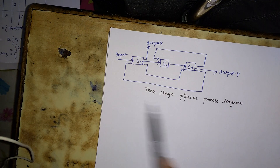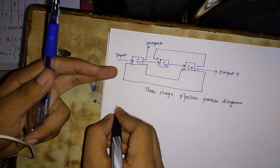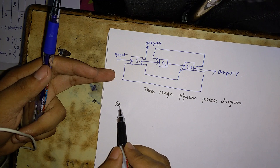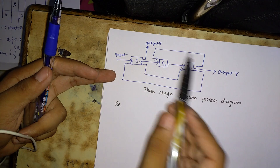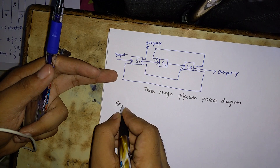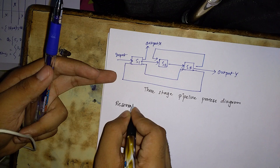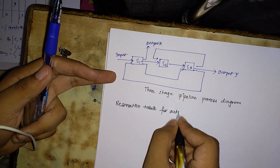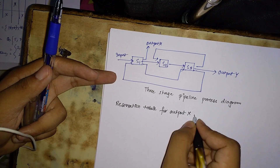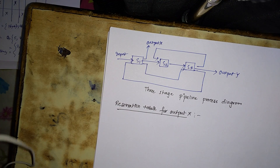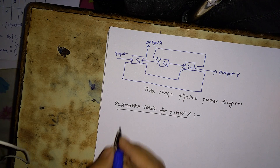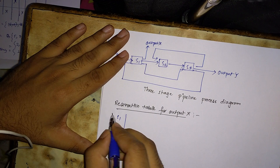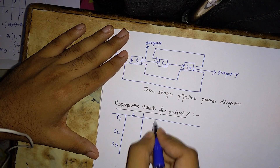From this diagram we have to find the corresponding reservation table. There would be two reservation tables — one for output X and one for output Y. For output X, there are three stages: S1, S2, and S3, and it takes eight clock cycles to perform the task.